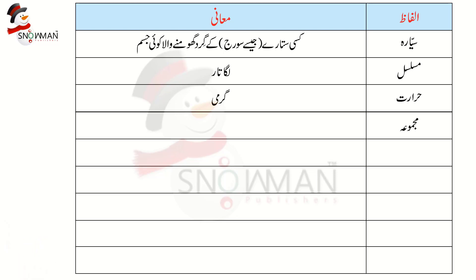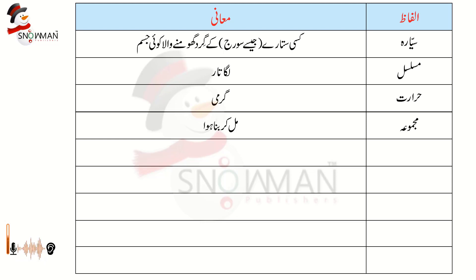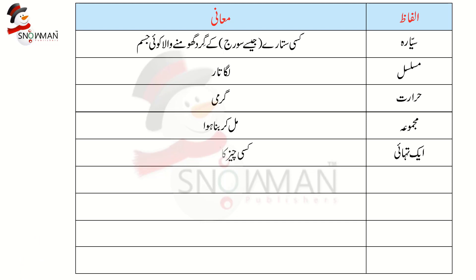اگلا لفظ ہے مجموعہ، یعنی مل کر بنا ہوا — اگر کچھ چیزوں کو جمع کر دیا جائے، اکٹھا کر دیا جائے تو اسے ہم ان چیزوں کا مجموعہ کہیں گے۔ اور اکتہائی یعنی کسی چیز کا تیسرا حصہ — one third۔